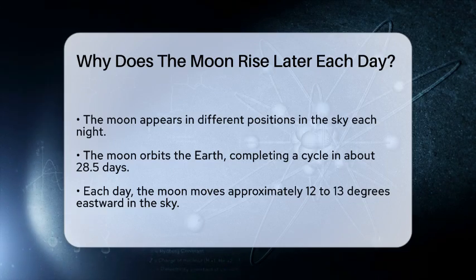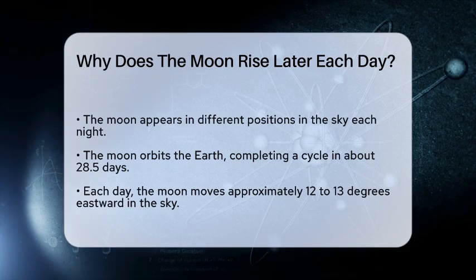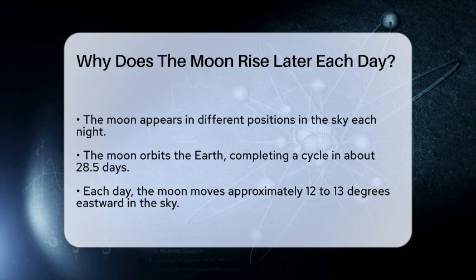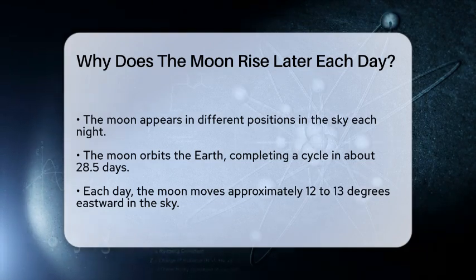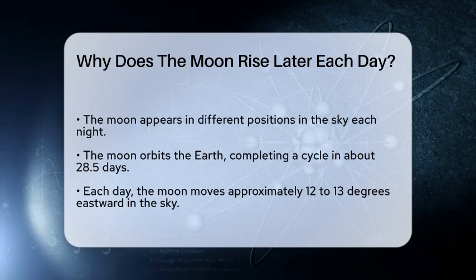First, let's talk about the moon's movement. The moon orbits the Earth, which takes about 28.5 days to complete. During this time, the moon moves around the Earth in an eastward direction. This means that each day, the moon is about 12 to 13 degrees farther east in the sky compared to the previous day.